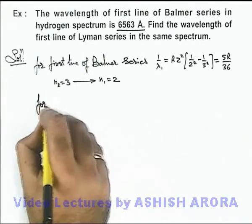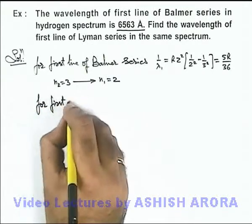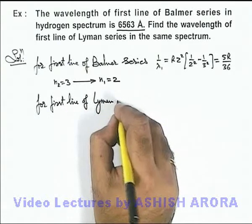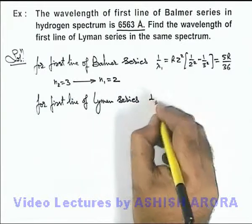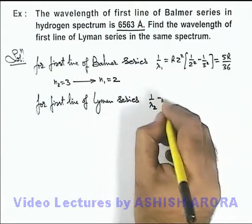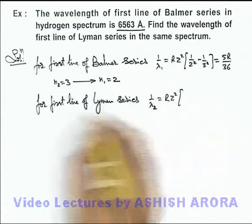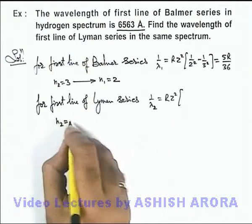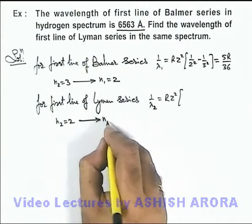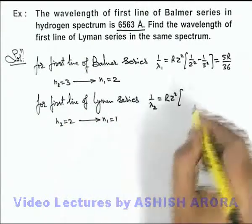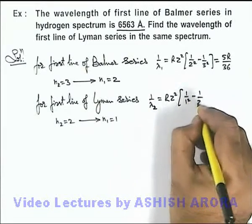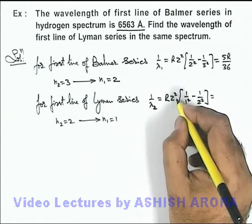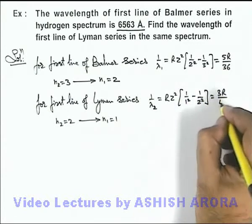Similarly, for the first line of the Lyman series, we can write the relation 1/λ2 = R·Z². For the Lyman series, the first line has n2 equal to 2 with the transition executed to n1 equal to 1. So it'll be written as 1/1² − 1/2², which on simplifying is 1 − 1/4. Taking Z as 1, we get 3R/4.